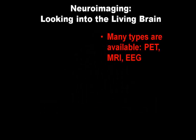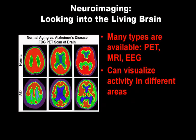Changes in the living brain can be seen using various neural imaging techniques. There are many types, including PET, MRI, and EEG. These can be used to visualize changes and activity in various brain regions. The image on the left compares active regions of brain activity, shown in red, as detected by a type of PET scan.